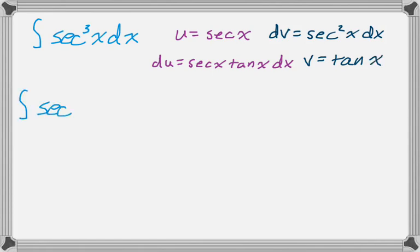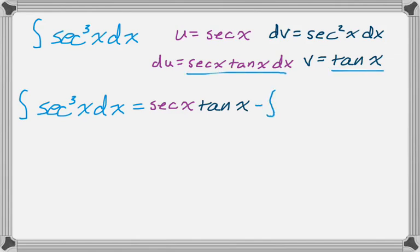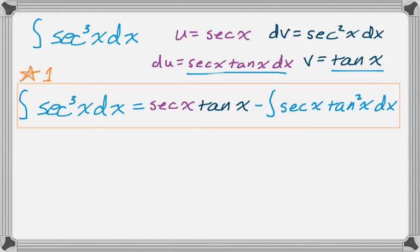So now we just apply the formula. So the integral of secant cubed is uv, so secant x tan x minus the integral of v and du, and I'm going to actually simplify that. So that's secant x tangent squared of x dx. I'm going to box that and call it number one, and I'm going to box that and call it number two, because now I need to figure out number two here.